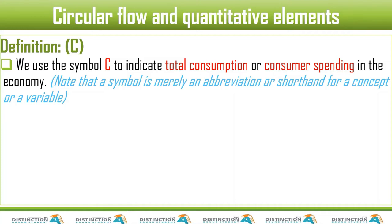Economics uses many symbols. In a workbook exercise asking what symbols stand for, learners typically know Y is income, G is government spending, T is tax — but they often get C wrong. C is not consumption; C is consumption spending. You can also say consumption expenditure — that means the same thing. There are two components of consumption in the basic model: induced consumption, which is affected by the level of income, and autonomous consumption, which is not affected by the level of income.